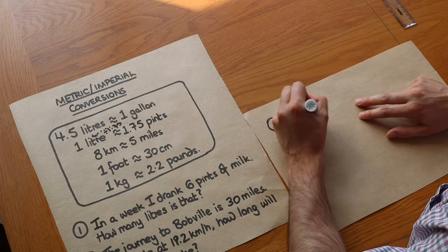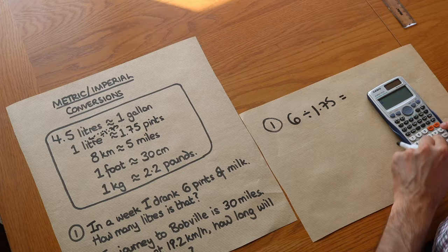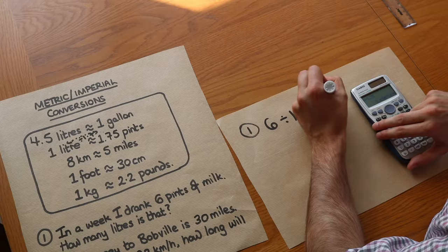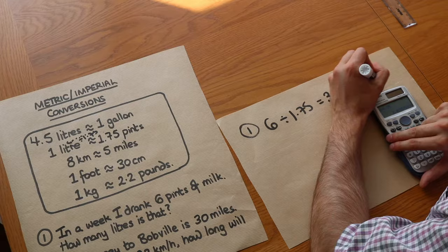So we've got 6 pints, so we just do the 6 divided by the 1.75, and that gives you to two decimal places 3.43 litres.